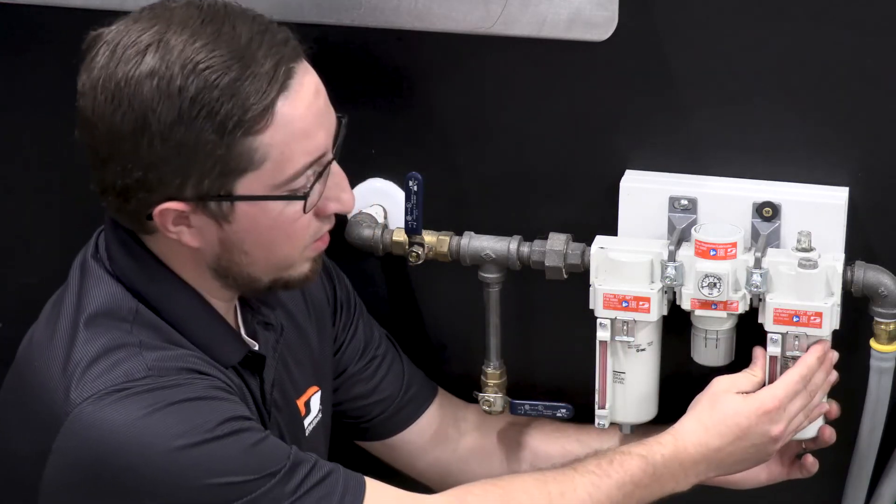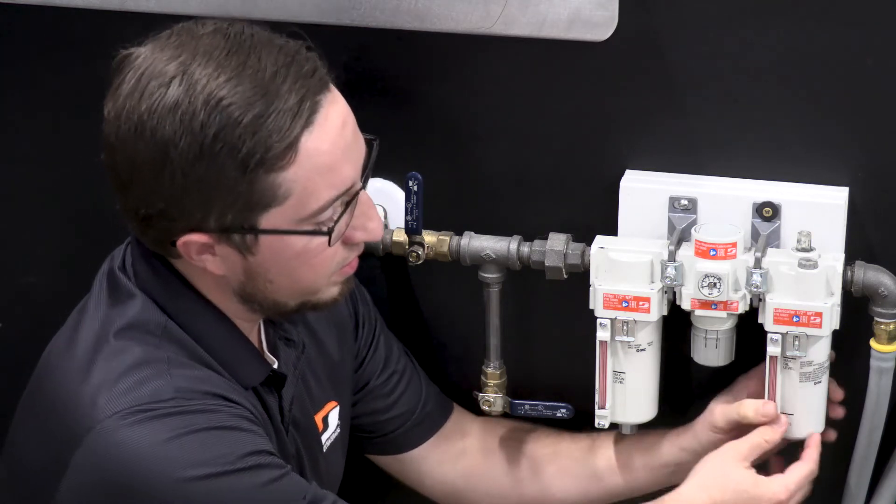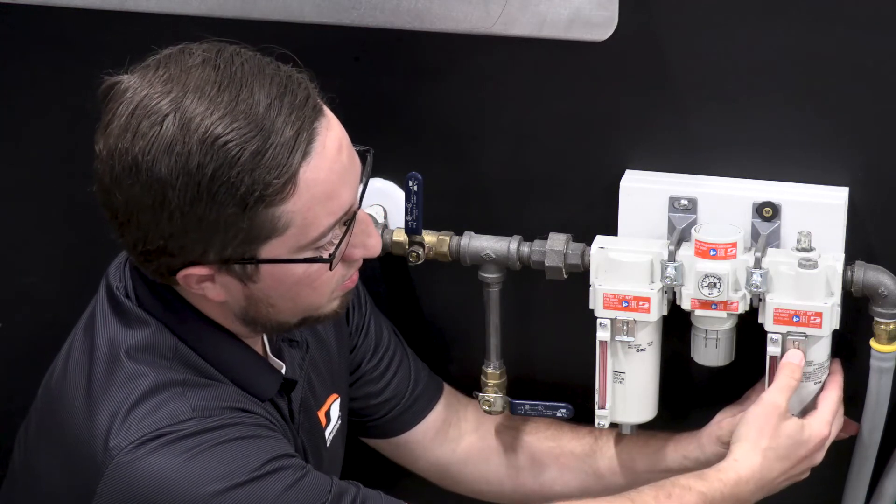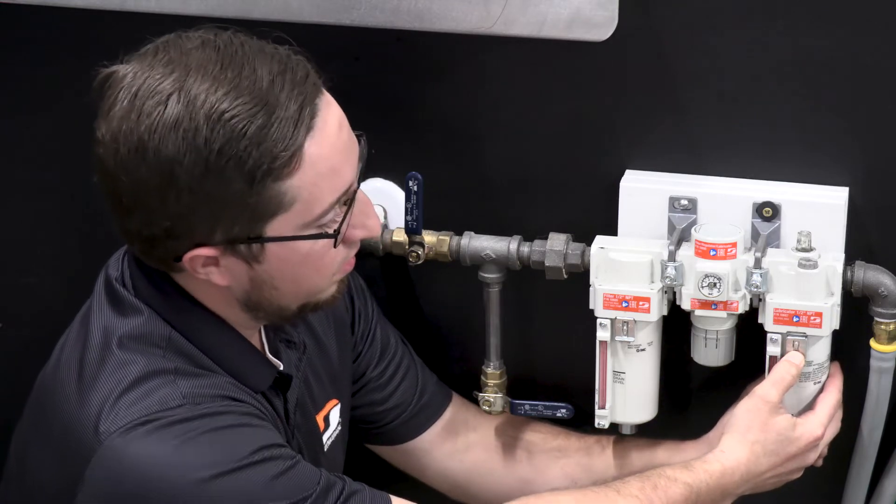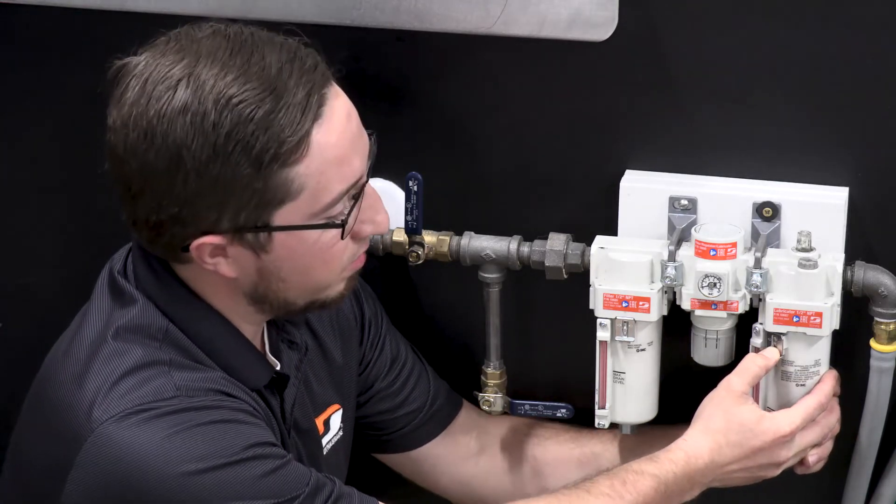On your lubricator side, you'll be checking your indicator, and when you need to refill this, you would simply depress the silver tab here, remove it just as you did the filter, counterclockwise or clockwise, and then pull down.